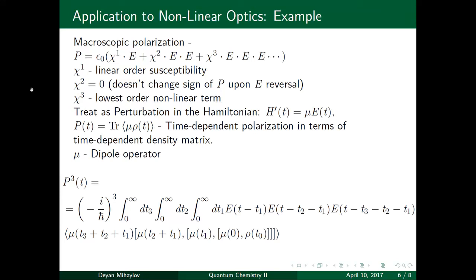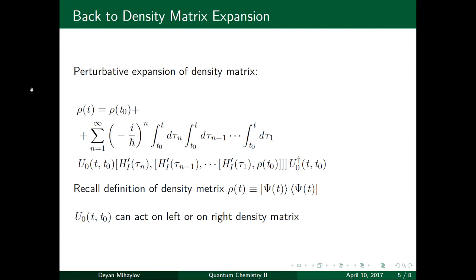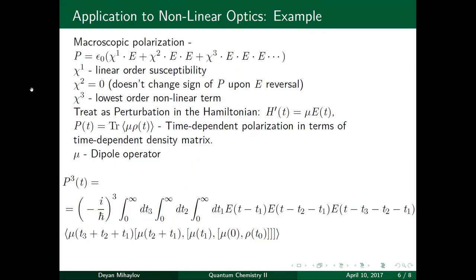Any observable that depends on statistical ensemble can be computed with density matrix, which wave functions can give you statistical ensemble, but density matrix can. So, the polarization is the trace of this dipole operator times the density matrix. So, plug this in, one gets an expression for the polarization in terms of the time-dependent electric field, and this dipole operator that only depends on intermediate times. And when you make the substitution from Heisenberg, from Schrödinger, from interaction back to Schrödinger picture, these time-evolution operators that we saw on this slide, they disappear.